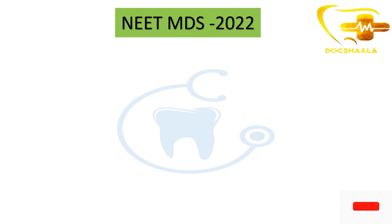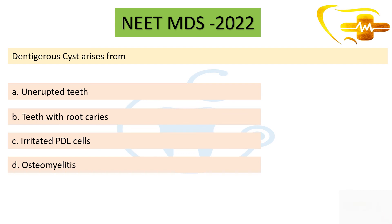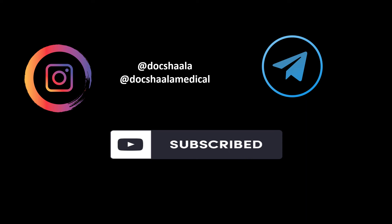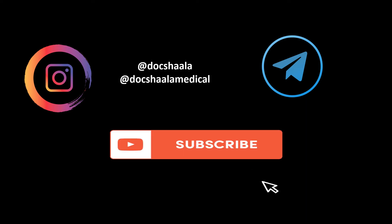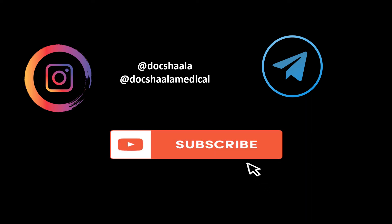A question asked in the previous NEET MDS exam was: 'Dentigerous cyst arises from?' — with options: an unerupted tooth, teeth with root caries, irritated periodontal ligament cells, and osteomyelitis. As we know, the dentigerous cyst arises from an unerupted tooth, so option A is the correct answer. If you like our video, do like, share, and subscribe to our YouTube channel. You can also follow us on Instagram at Docshala for dental content and Docshala Medical for medical content, and on Telegram.